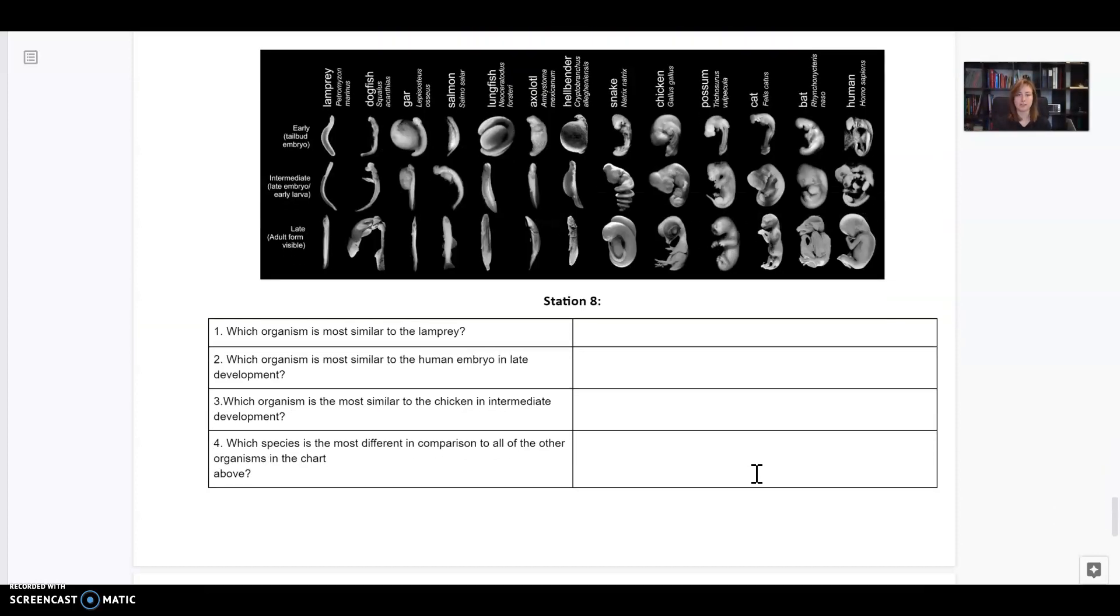Let's go on to station eight. All station eight is trying to show you is the similarities between embryos. And then once they become like a fetus, which is farther developed, then they don't look so similar anymore. This is showing you the early development, the middle development, then late development, like when you can tell what it's going to become. So you can see in the early development of all these species, they all look pretty similar. Look at this cat embryo. You probably wouldn't be able to tell that's a cat if it wasn't labeled.